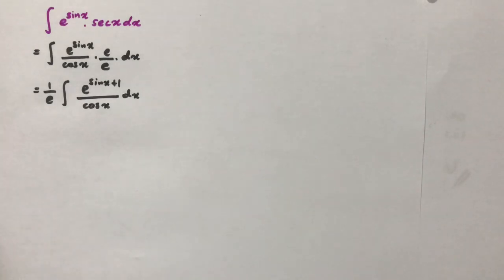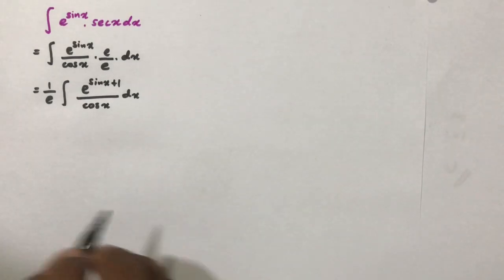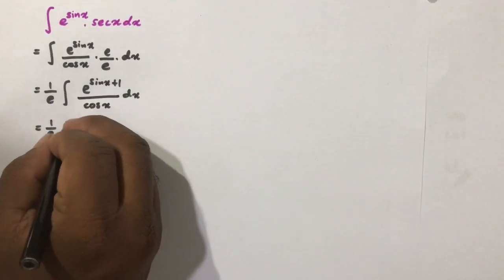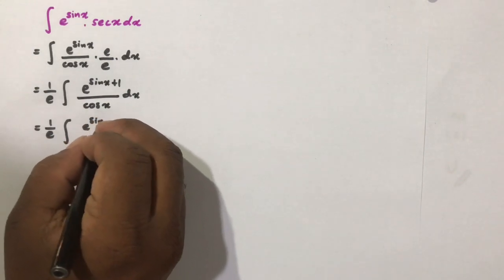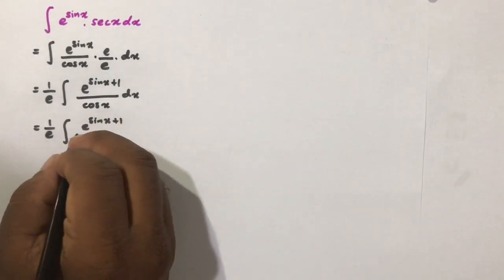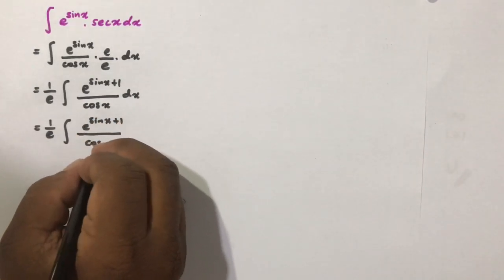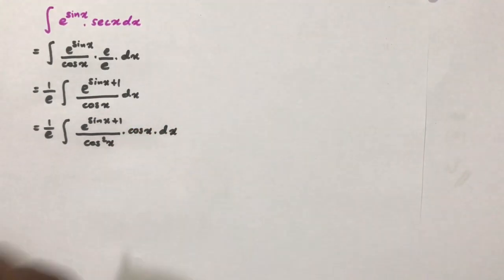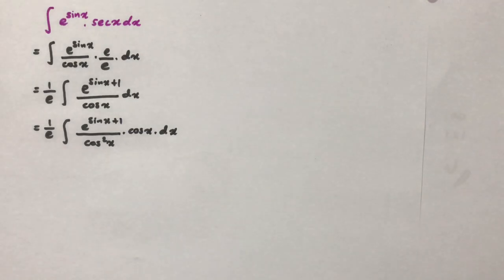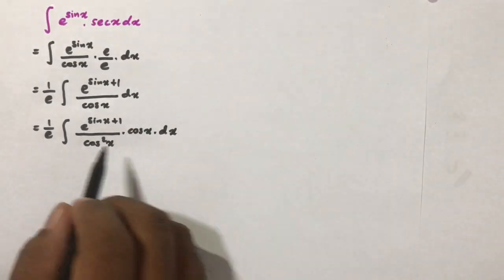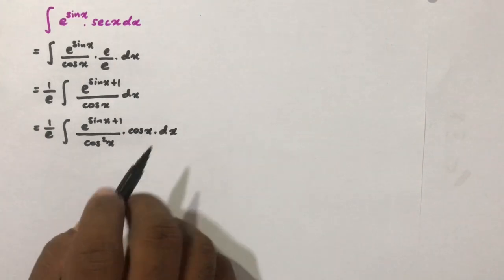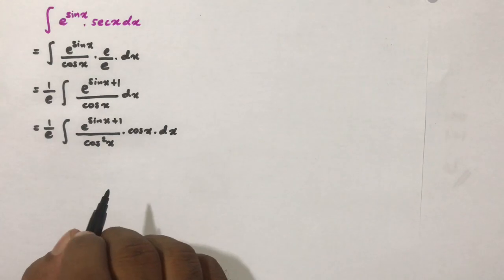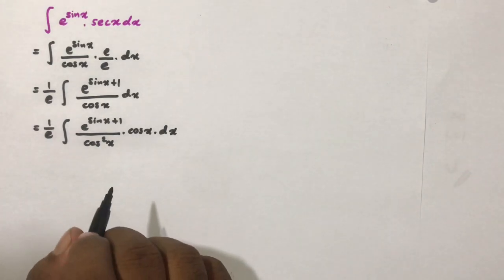As the next step, I am going to multiply both numerator and denominator by cosine of x, so we have 1 over e times the integral of e to the sine of x plus 1 over cosine squared of x times cosine of x dx. This makes our integral look more complex, but you will understand why at the end of the video.